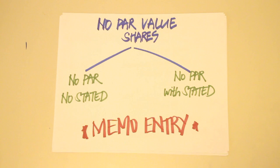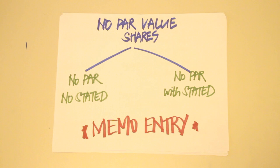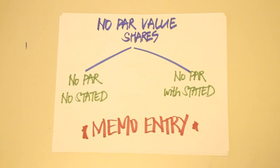Remember that no-par shares are deemed fully paid and their value cannot be reassessed. No-par shares cannot be issued below five pesos, and only the memo entry method is used when accounting for these. Note that insurance companies, loan companies, public utilities companies, and banks cannot issue no-par value shares.